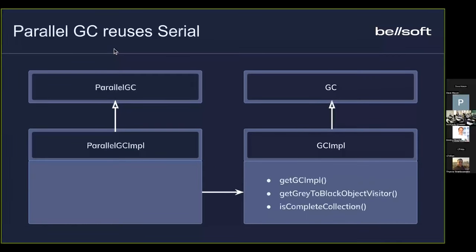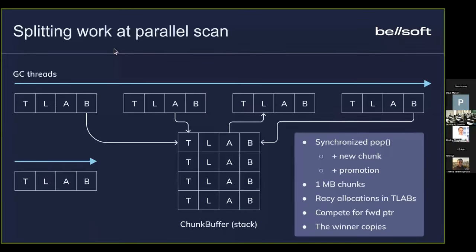From the implementation perspective, we tried to reuse as many existing things as possible. The parallel garbage collector is based on what the serial garbage collector does — it reuses many pieces from the serial garbage collector. It parallelizes the phase of gray object scanning and takes the existing visitor logic, just adding parallel processing on top of it. With parallel processing comes the problem of synchronization between GC threads.